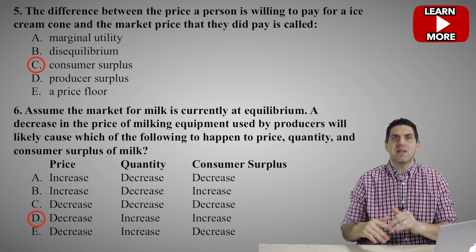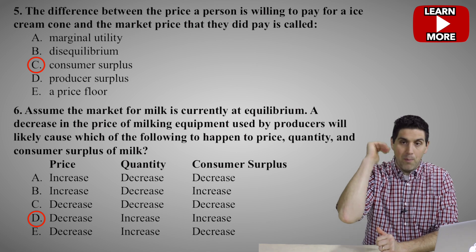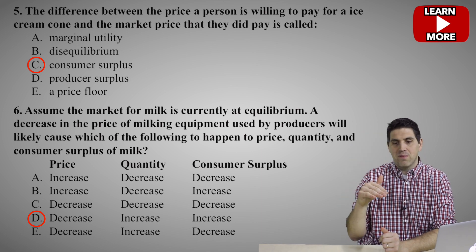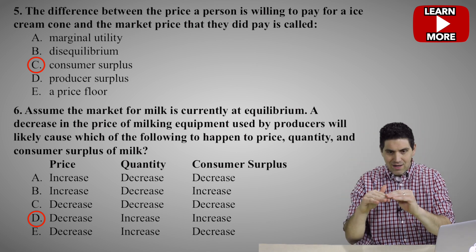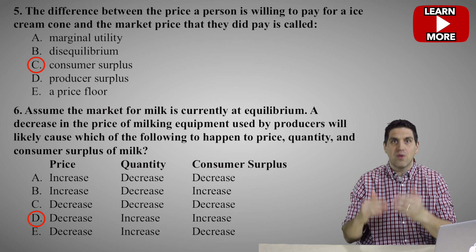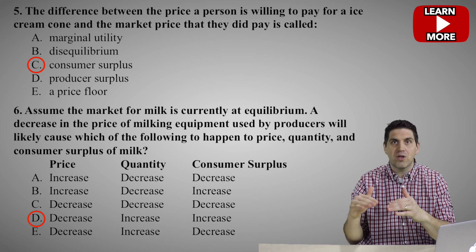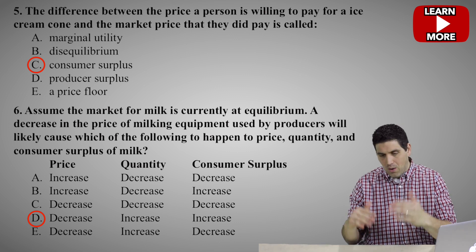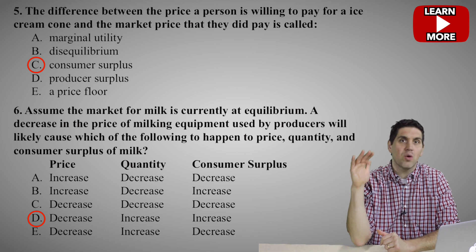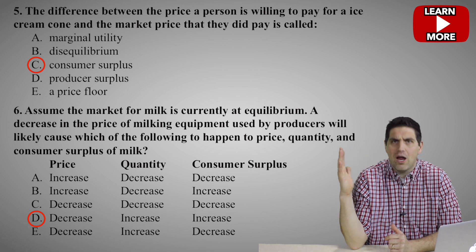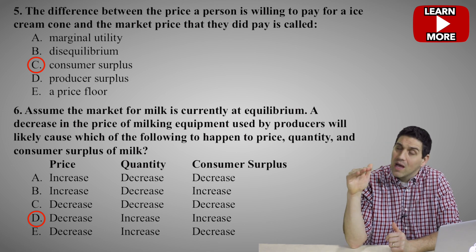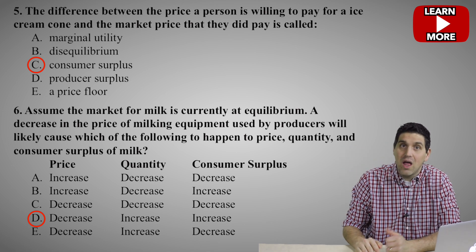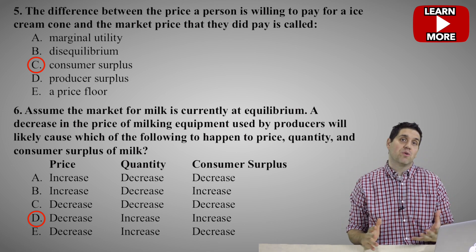If the price falls, the difference between what I'm willing to pay and what I did pay increases. The price of milking machines lowered the price of milk. I'm still willing to pay $8 for a gallon of milk, but now the price has fallen even lower — so I have more consumer surplus.